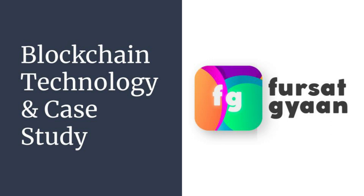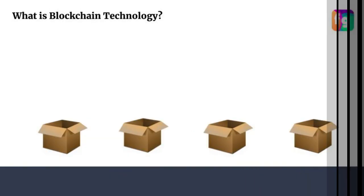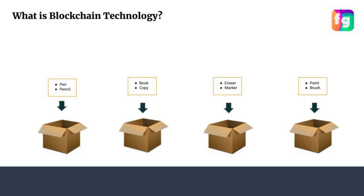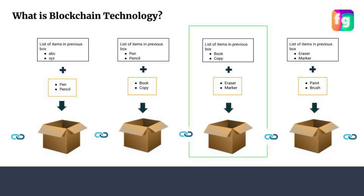Let's start with an example. Suppose you are in a room where you have multiple boxes and you have to add items to these boxes. In each box you added one or two items — for example, in the first box you added pen and pencil, in the second box book and copy, in the third box eraser and marker, and so on for all the boxes. And one more thing you added with each box: the list of items that you added in the previous box.